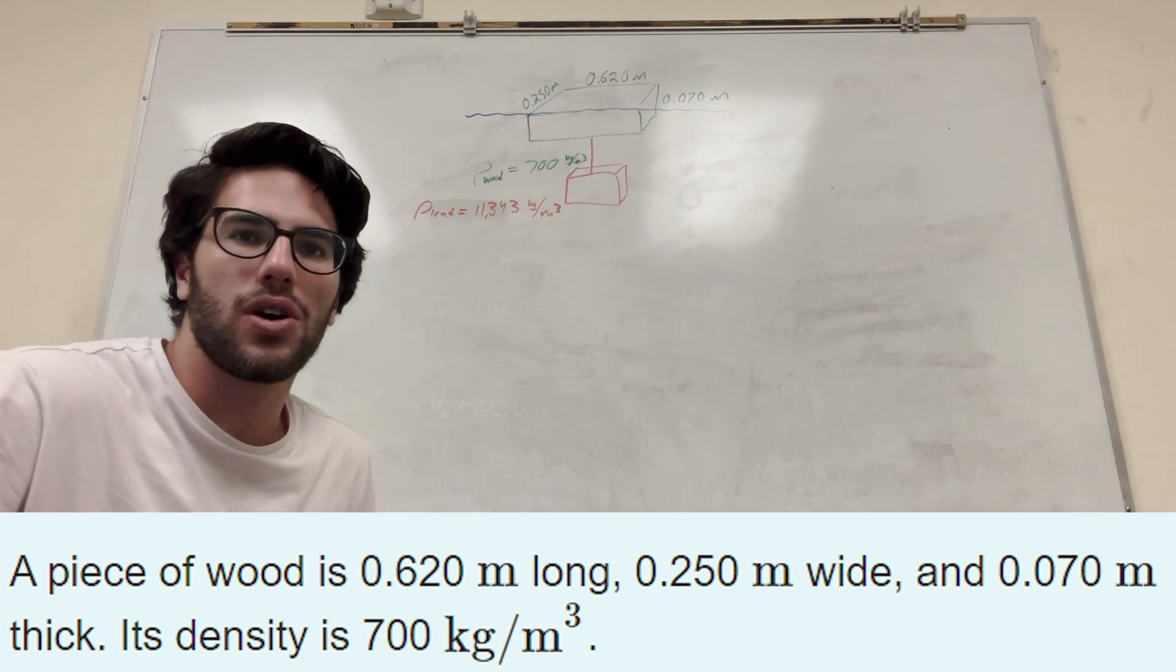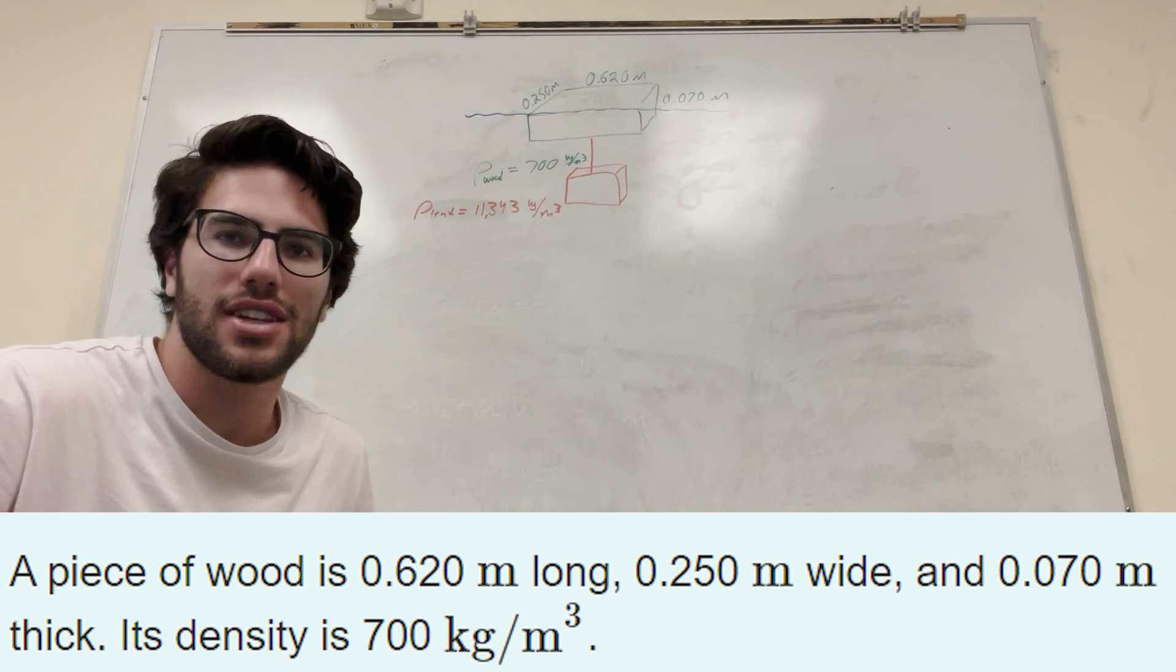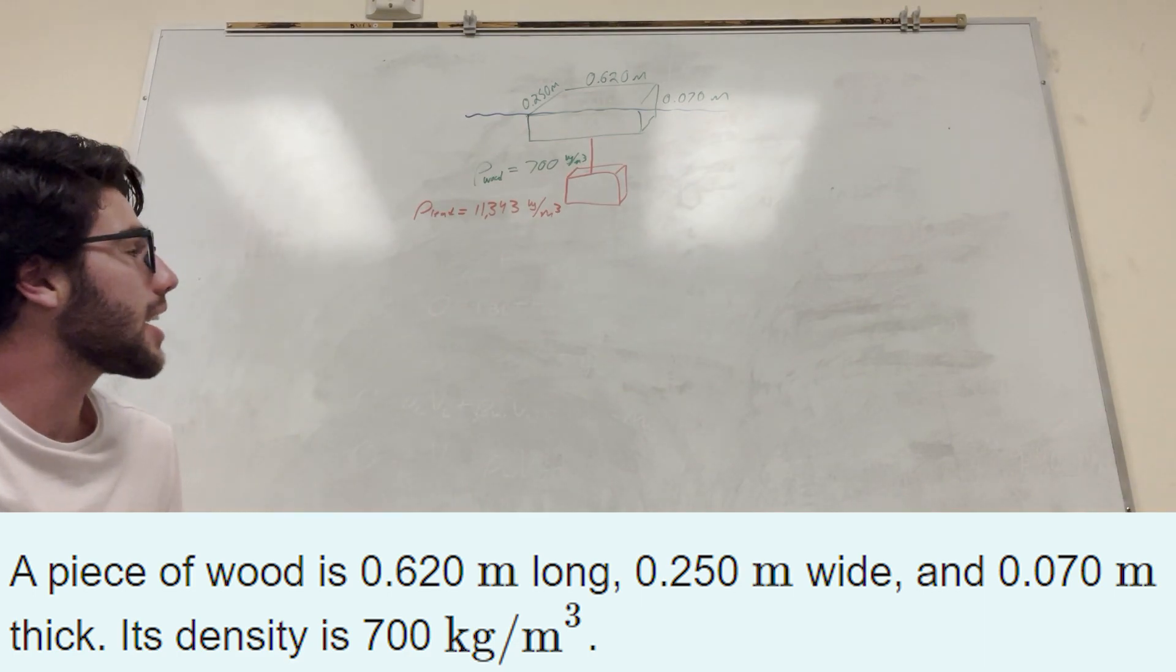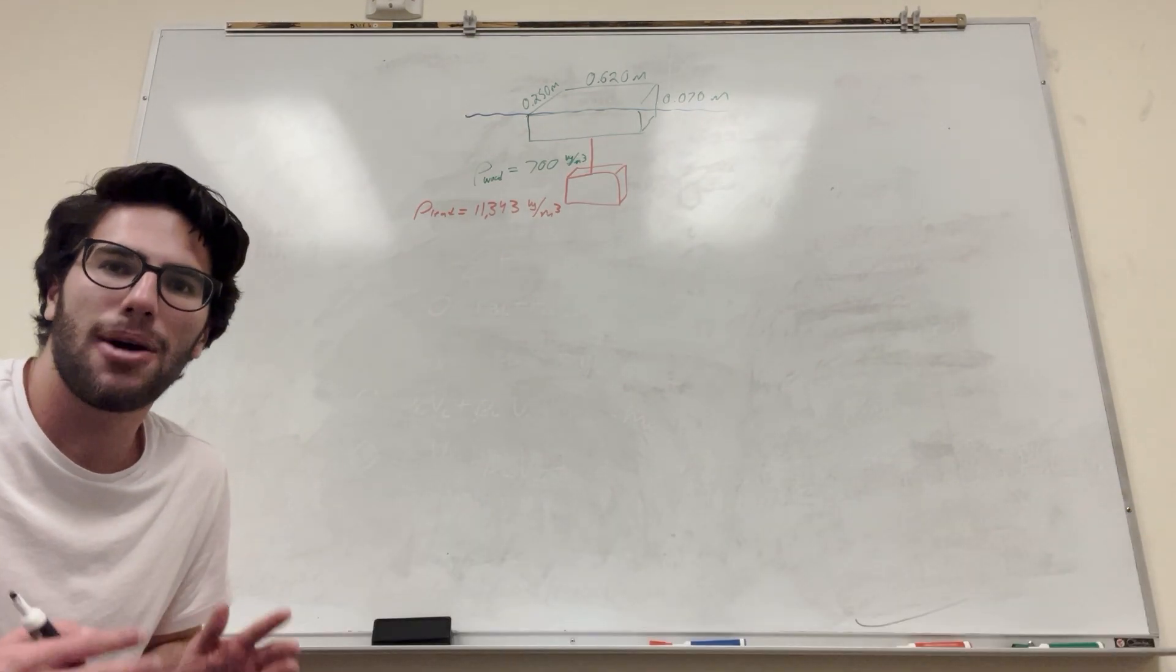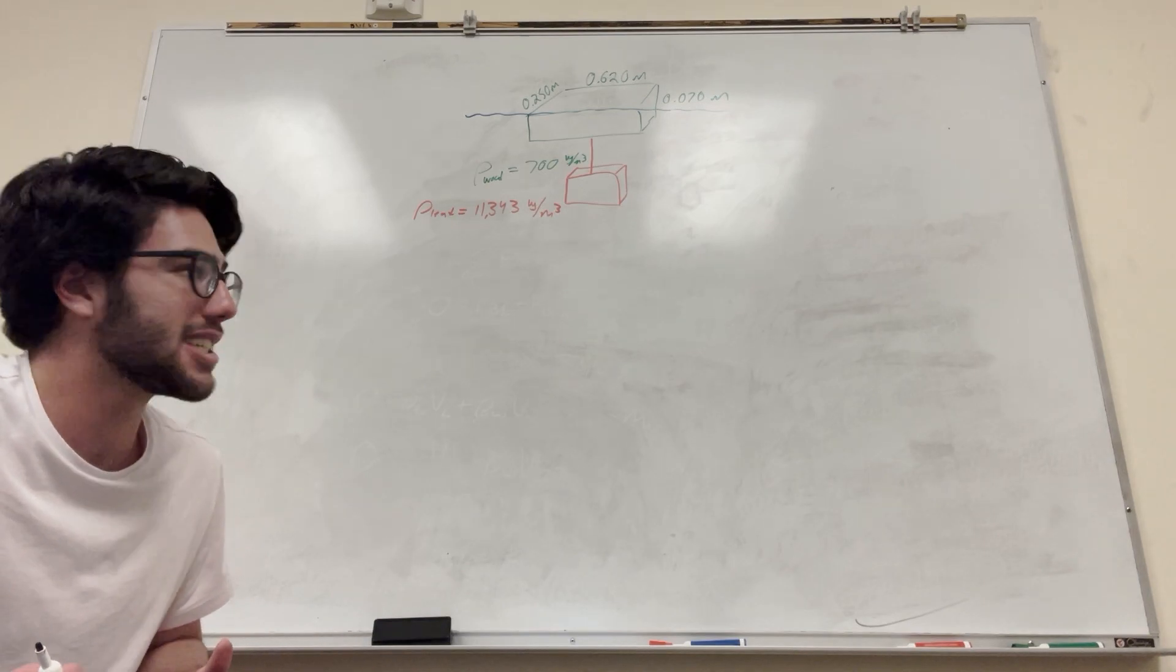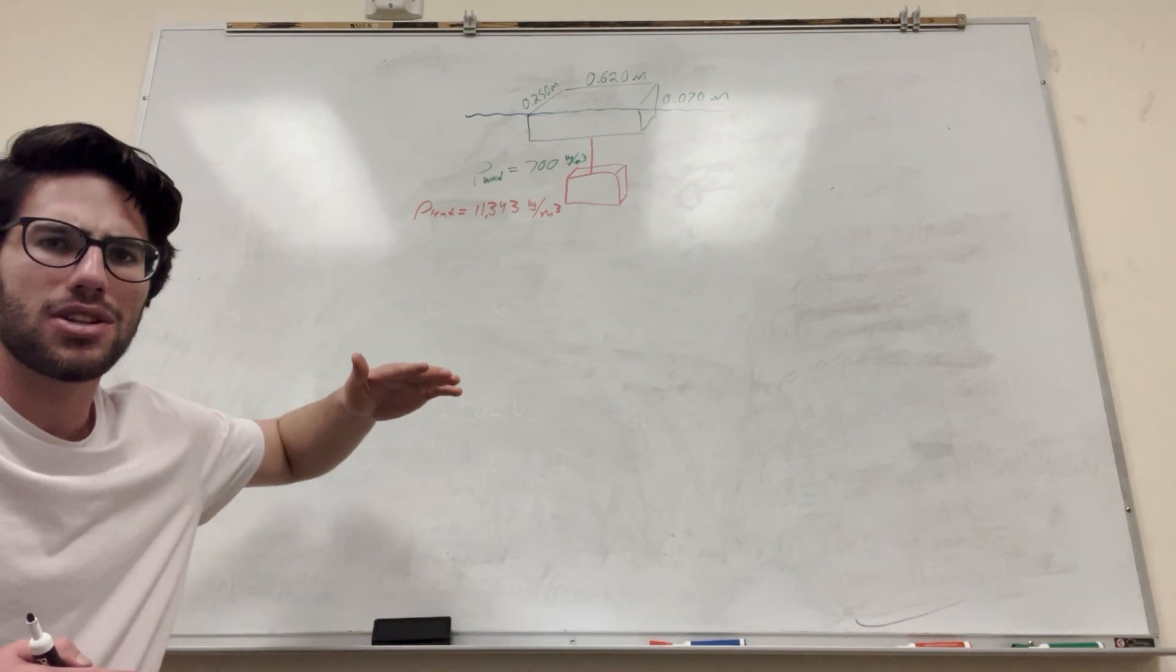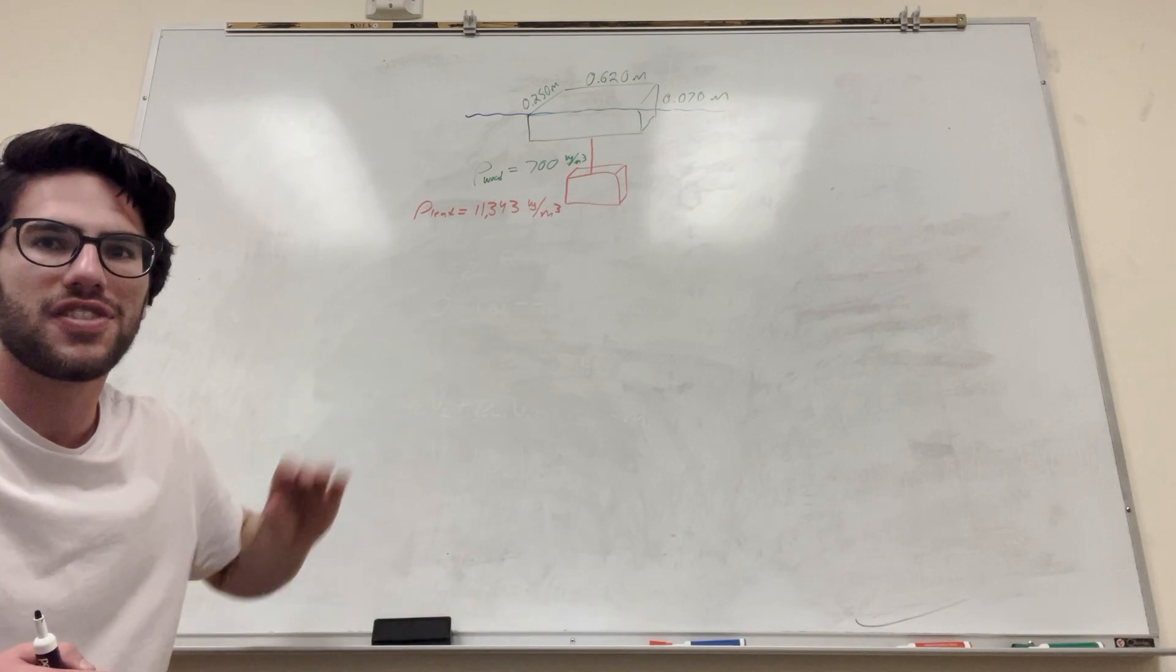All right, so we got this block of wood, right? And it gives you all these dimensions. And it gives you that a block of lead is attached to the wood. And it wants to know what the volume of that lead has to be so that it just sinks below the surface and floats there, just below the surface.